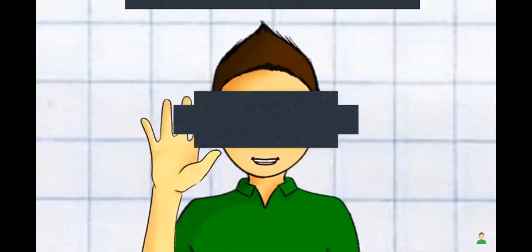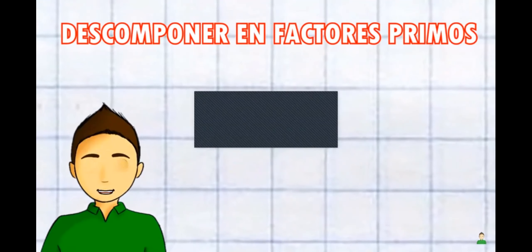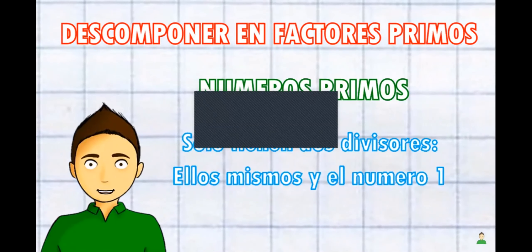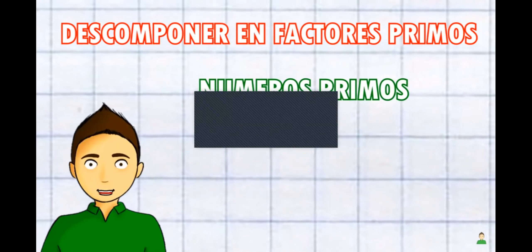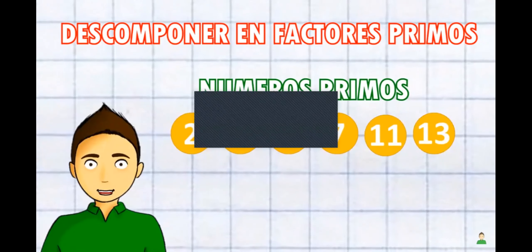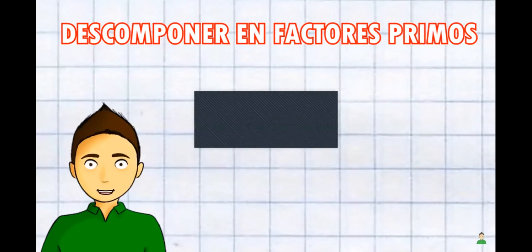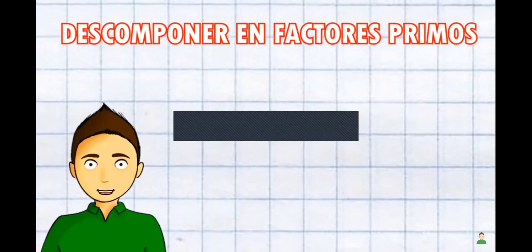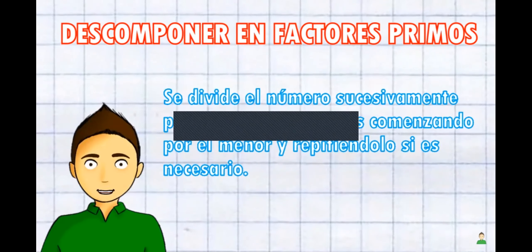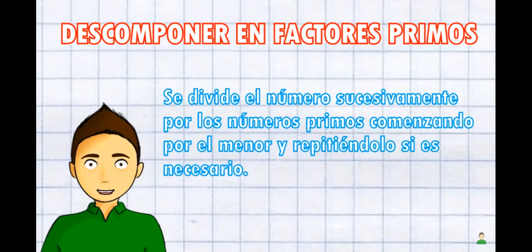Hola, espero que estén muy bien. Mi nombre es Daniel Carreón y hoy les voy a platicar de uno de mis temas favoritos: descomponer un número en factores primos. Pero antes de empezar, revisemos estos conceptos. Los números primos son aquellos que solo tienen dos divisores: ellos mismos y el número uno. Algunos ejemplos de números primos son el 2, 3, 5, 7, 11 y 13. Cuando hablamos de descomponer un número en factores primos, es decir, dos o más números primos que dividan exactamente a un entero, esto se logrará haciendo divisiones utilizando los números primos hasta llegar a uno.